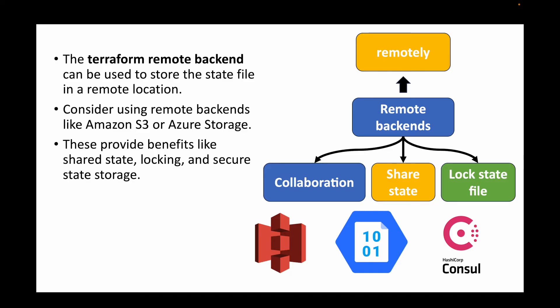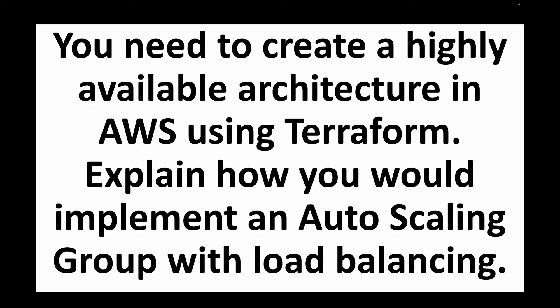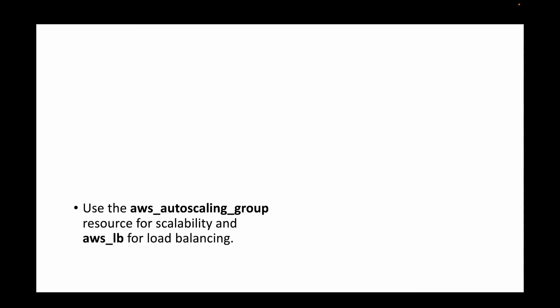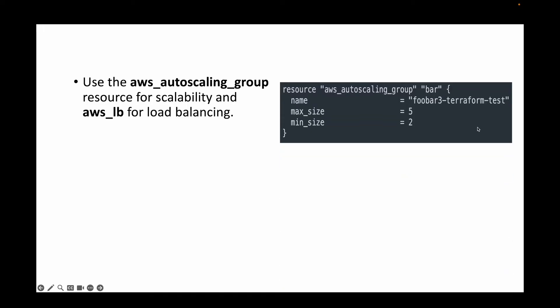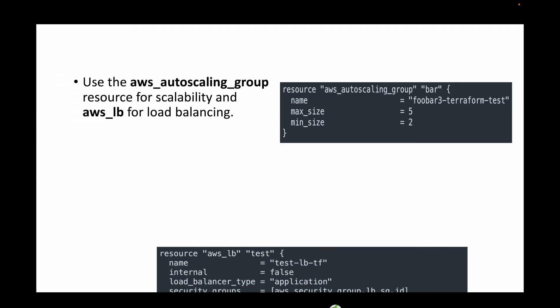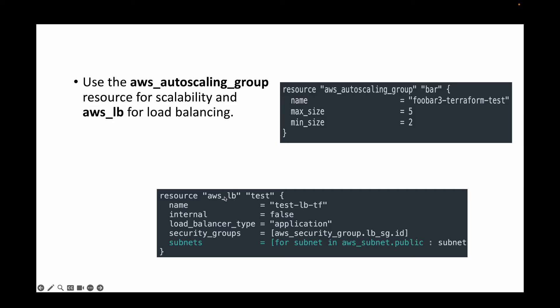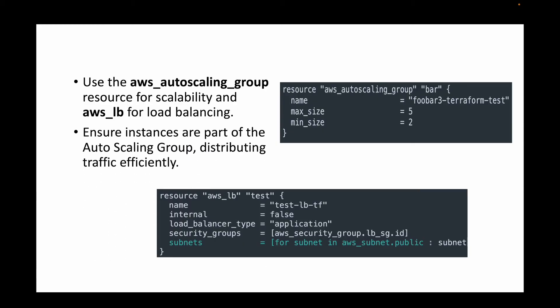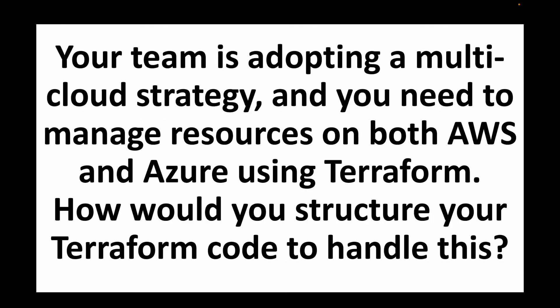The next question is: you need to create a highly available architecture in AWS using Terraform — how would you implement auto scaling groups with load balancing? We create resource blocks with the respective resource types: 'aws_autoscaling_group' for the auto scaling group and 'aws_lb' for the load balancer. We also ensure that the instances being created are part of both the load balancer and auto scaling group, which efficiently distributes traffic and makes the application highly available.